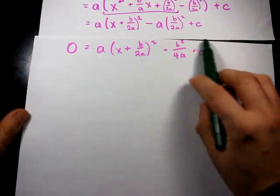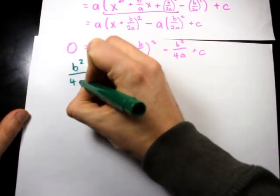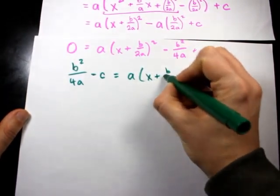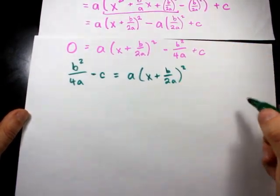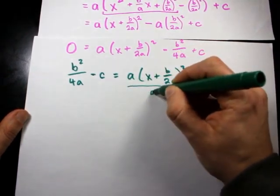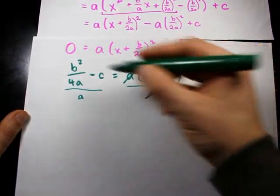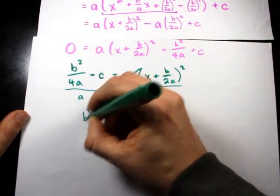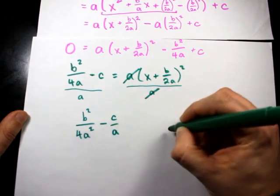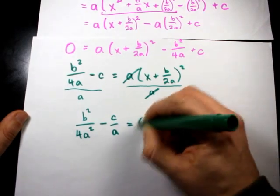I'm going to move all of my constant terms over to the other side. That gives me positive b squared over 4a minus c. And all of this stays exactly the same. Oops, squared. I'm going to divide both of these sides by a. Now, I don't usually do it this way, but I teach high school, and most kids like seeing it this way. So those a's cancel, and what we get over here ends up being b squared over 4a squared minus c over a. And that equals my x plus b over 2a all squared.